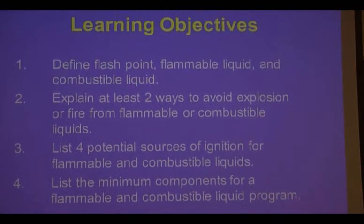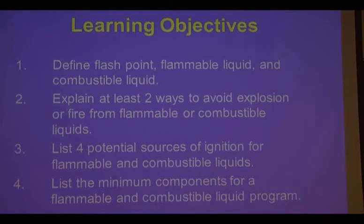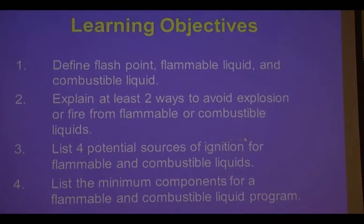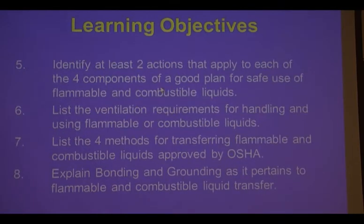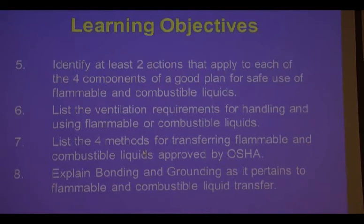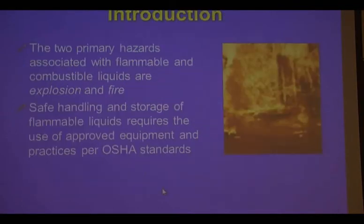Define flashpoint, flammable liquid, and combustible liquid. Two ways to avoid explosion or fire from flammable or combustible liquids. Four potential ignition sources. Minimum components for a flammable and combustible liquid program. Two actions that apply to each of these components. Ventilation requirements. Four methods to transfer liquids approved by OSHA, and bonding and grounding as it pertains to these things.